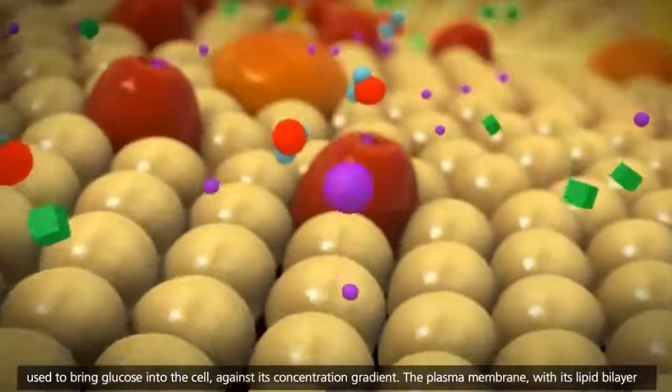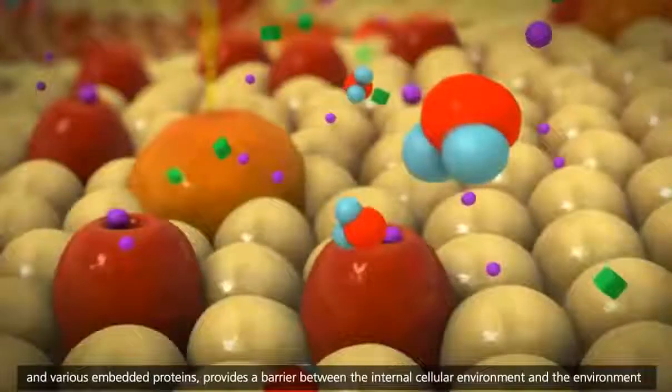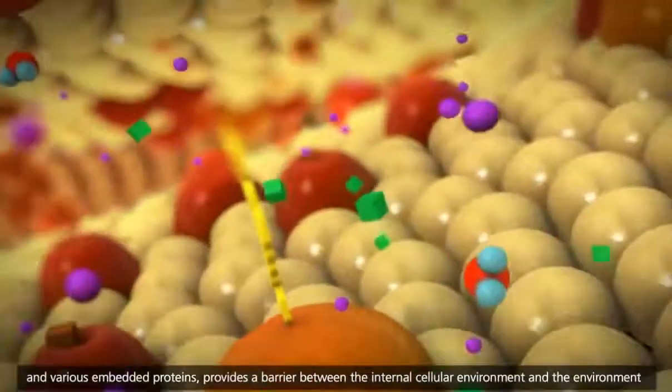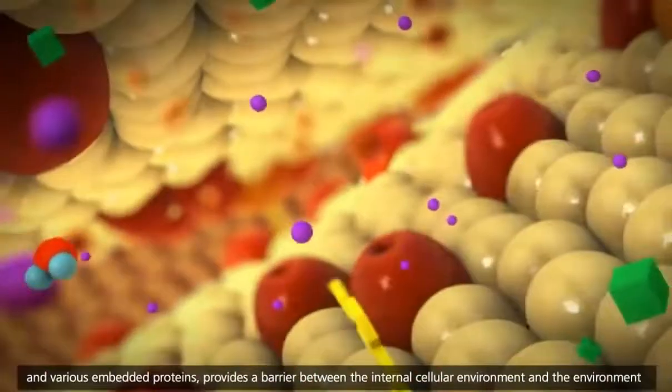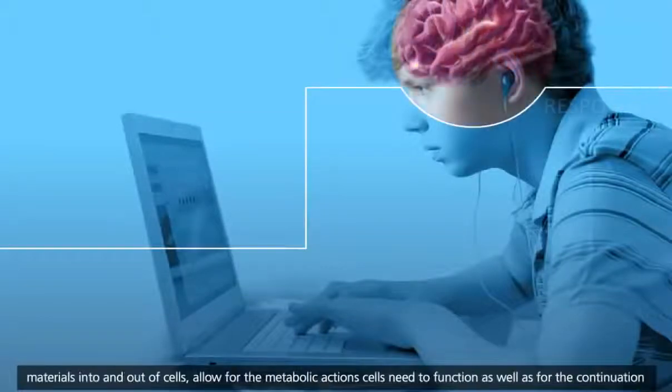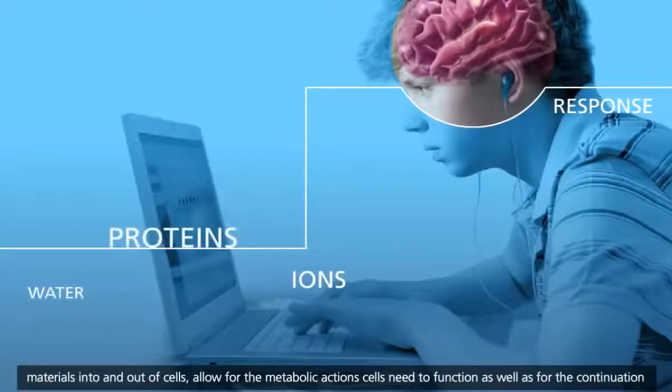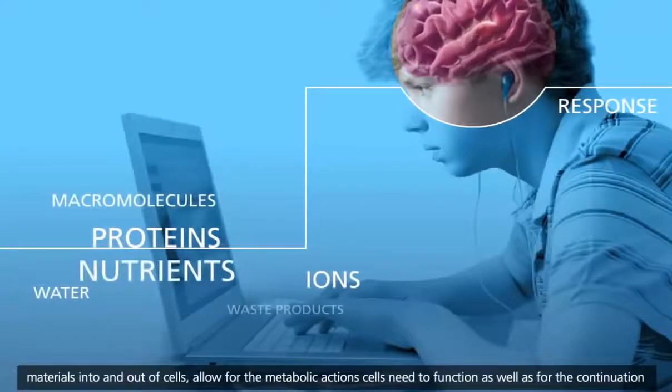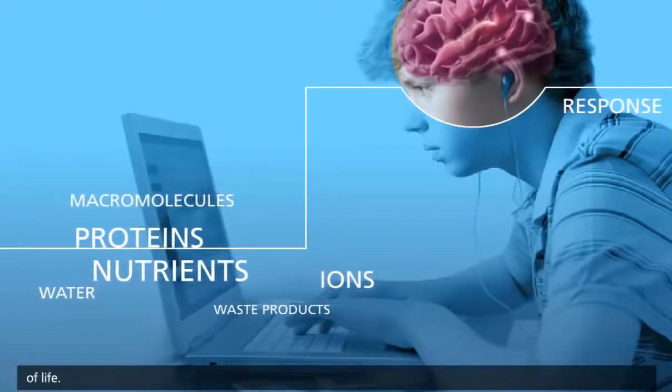The plasma membrane, with its lipid bilayer and various embedded proteins, provides a barrier between the internal cellular environment and the environment surrounding the cell. The structure and function of the plasma membrane, coupled with the processes of moving materials into and out of cells, allow for the metabolic action cells need to function, as well as for the continuation of life.